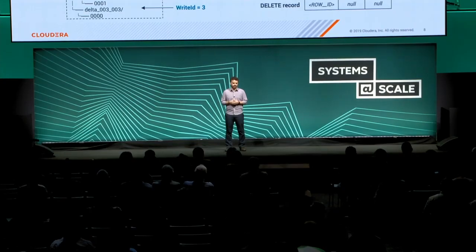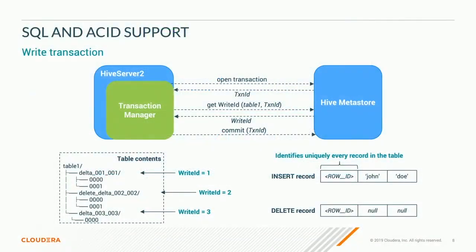After you get the write ID, it is attached to the record writers, you execute your query, and commit your transaction. Looking at the table layout, you have delta or differential directories when you insert new records or records you are deleting. Each of these folders is identified by its write ID, which prevents multiple folders from stepping on each other. One thing to notice is that we have different folders for insert and delete records.